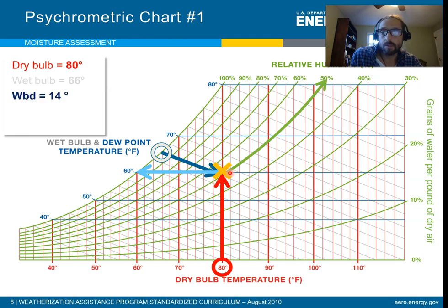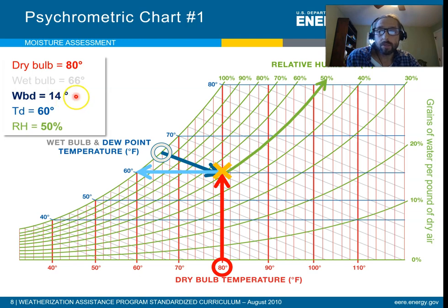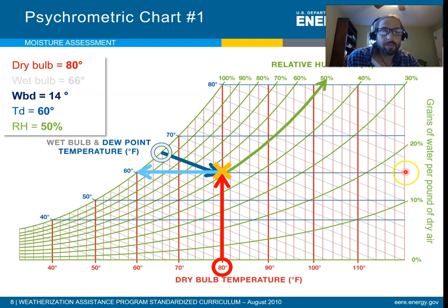Our wet bulb depression is 14 degrees, which is the difference between the dry and the wet bulb. Our dew point — you follow directly to the left — and that's 60 degrees. So you can tell your dew point as well, and the relative humidity is 50%. In the previous lesson we just looked at the wet bulb depression and found the relative humidity based on that. But as you can see, if you have these readings with a psychrometric chart, you can tell a lot of other things, including the absolute humidity if we had units over here.